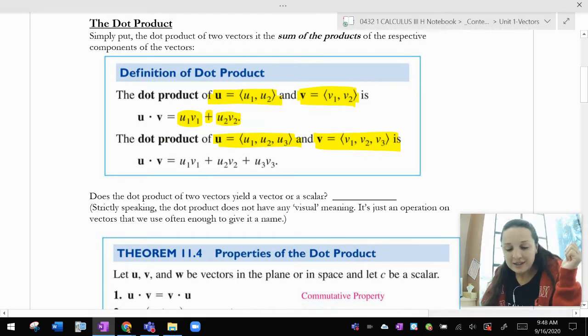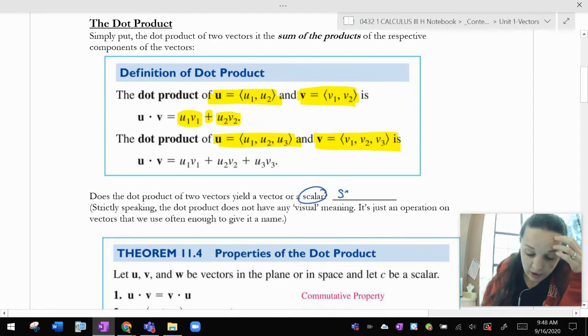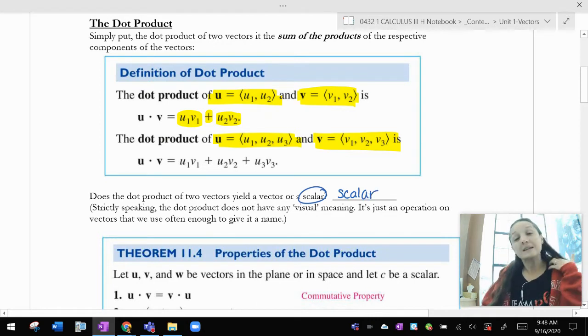So does the dot product yield a vector or a scalar? Well, since there aren't any commas or any brackets on that right-hand side, it is, you guessed it, a scalar. A dot product takes two vectors, dots them, and then turns them into a number.